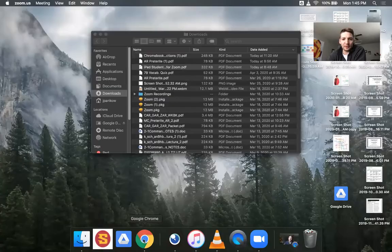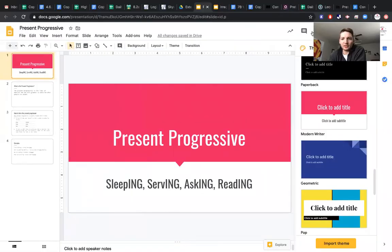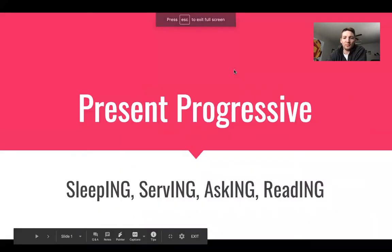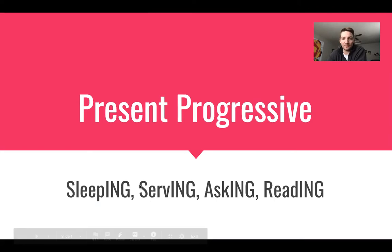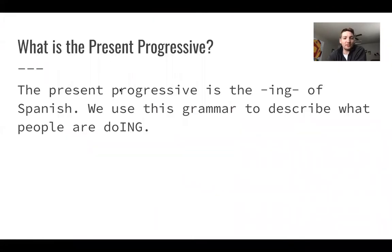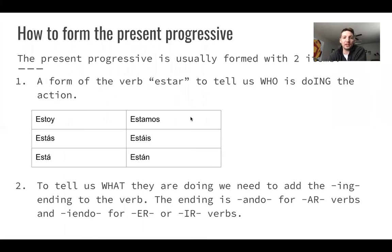I think that's all I have for housekeeping, so now we're going to jump into our little lesson for today. I'm going to start sharing my screen — you should be able to see what is going on right about now. We were talking about the present progressive, or el presente progresivo. In English, decimos cosas como: sleeping, serving, asking, reading — this is our I-N-G, lo que estamos haciendo ahora en este momento. The Spanish present progressive is the I-N-G of Spanish. We use this grammar to describe lo que estamos haciendo, or what we are doing right now — ahorita.